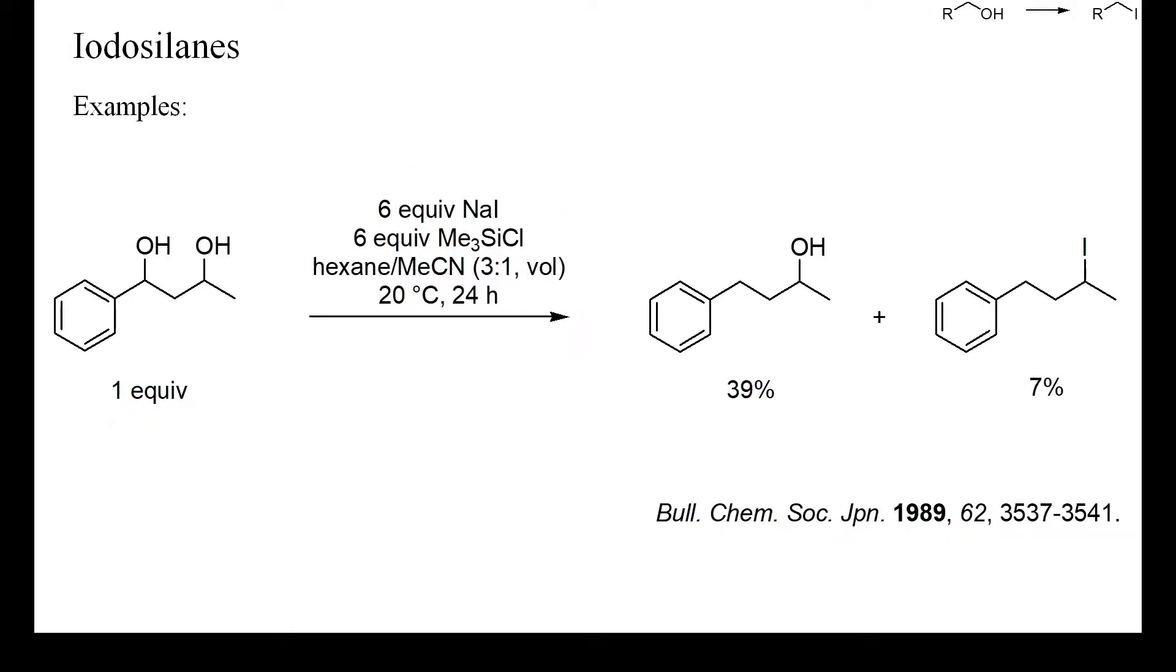As with most other deoxyiodinating procedures, reduction is an important potential side reaction. In particular, when using a large excess of iodide, as in this example, or when allowing the reaction to proceed for too long, sensitive groups can be reduced extensively.